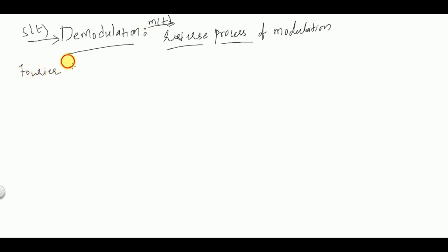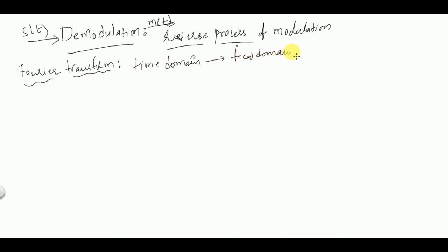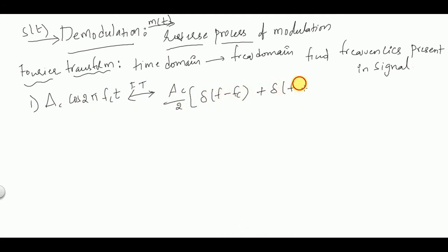The basics of Fourier transform are required to analyze analog communication systems. Fourier transform is used to convert a time domain signal into a frequency domain signal — that is, to find the frequencies present in a signal. The Fourier transform of the carrier signal Ac·cos(2πfc·t) is given by (Ac/2)[δ(f − fc) + δ(f + fc)].